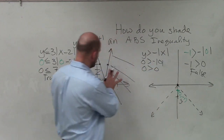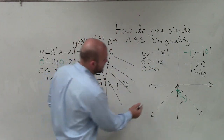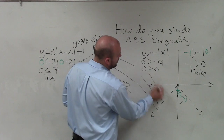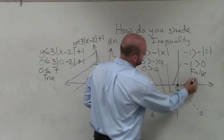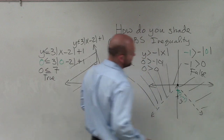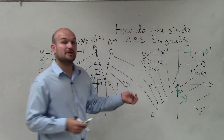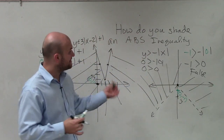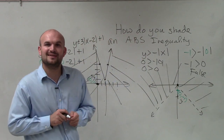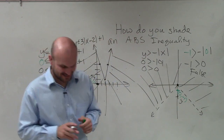So just like on the first example, I am going to represent all those solutions by shading above the line. So there you go, ladies and gentlemen — that is how you shade an absolute value inequality. Thanks.